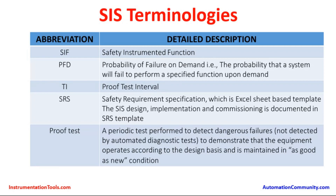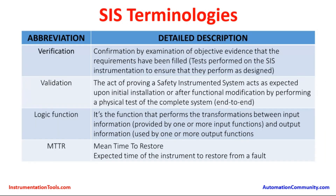The proof test ensures that they operate whenever there is a demand — whenever any hazard is occurring, the sensor elements have to act. Verification is a confirmation by examination of objective evidence that the requirements have been fulfilled. It is a test performed on the SIS instrumentation to ensure that they perform as designed.